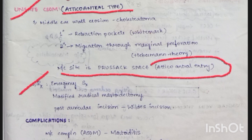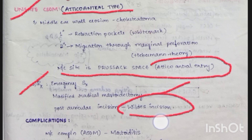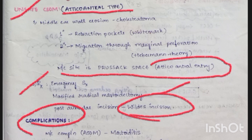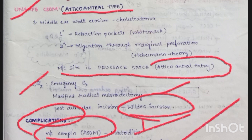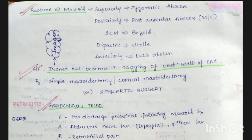Treatment for unsafe CSOM is emergency surgery — modified radical mastoidectomy, done through a post-auricular incision. Complications: most common complication is mastoiditis. In mastoiditis, we see the reservoir sign. Rupture of mastoid superiorly forms a zygomatic abscess; posteriorly forms post-auricular abscess — post-auricular abscess is most common.